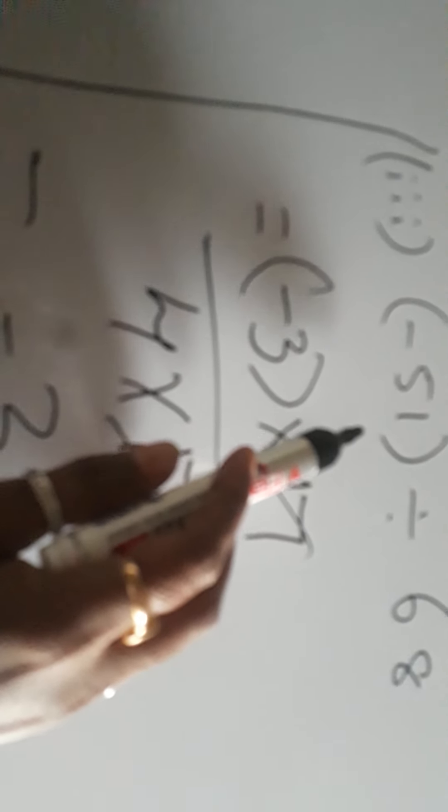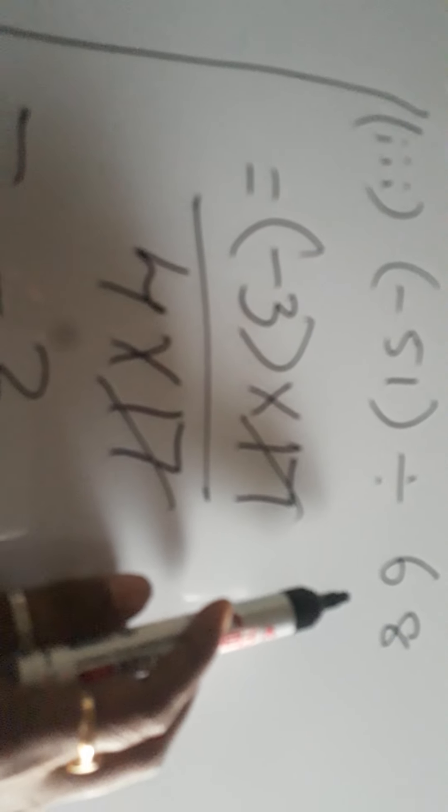So it is negative. Negative integer divided by positive integer is giving you a negative fraction. As mentioned earlier in the first point, when any integer is divided by another integer and it is not exactly divisible, then it gives you a fraction. So this is a fraction.